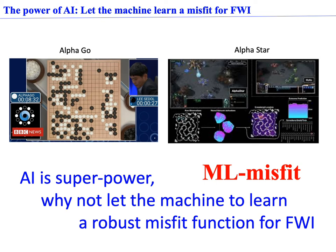This is related to the main topic of this talk. We propose to learn a misfit function for FWI using machine learning, and we give it the name MLMisfit. We use a machine learning technology called meta-learning to train such a misfit function.